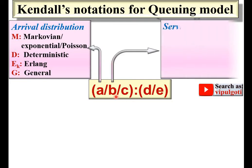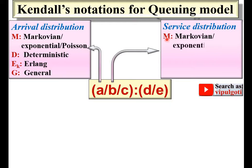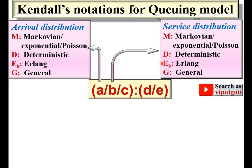Next, B represents service distribution, which is also of different types. M represents Markovian, exponential, or Poisson distribution; D represents deterministic distribution; Ek represents Erlang distribution with k factor; and G is the general distribution. Generally A and B have the same type of distribution, but A represents arrival distribution and B represents service distribution.